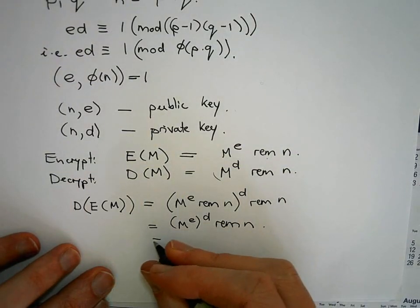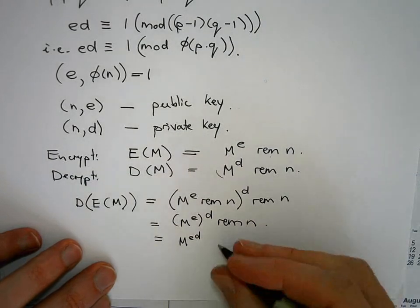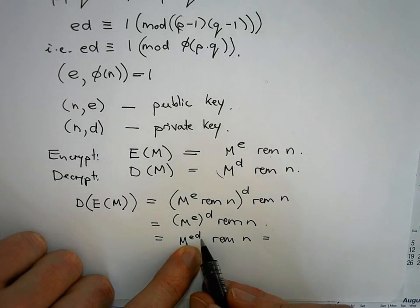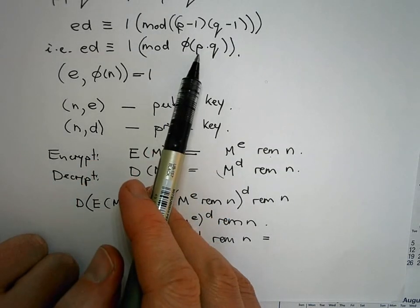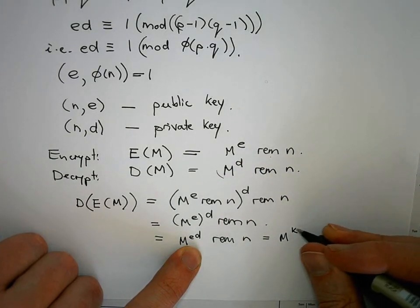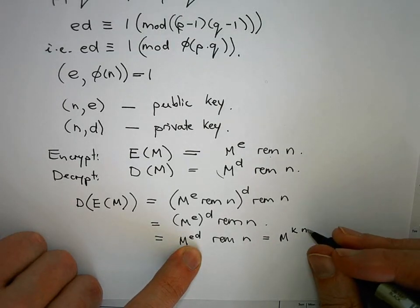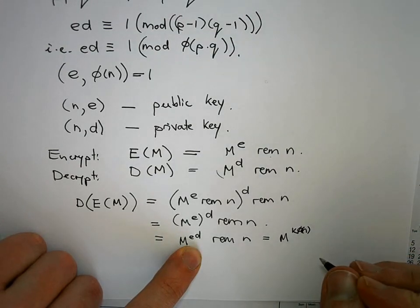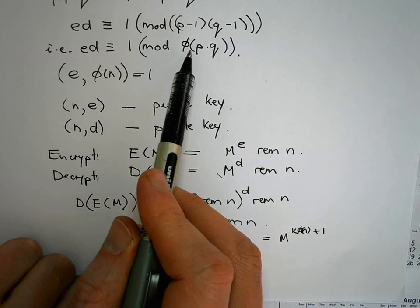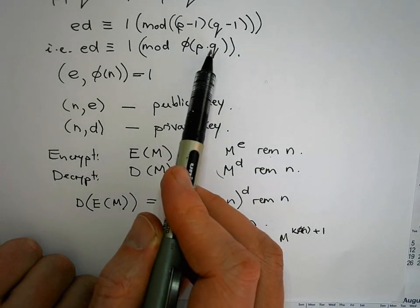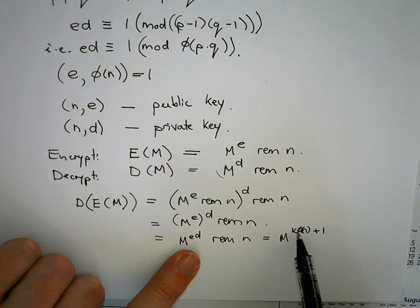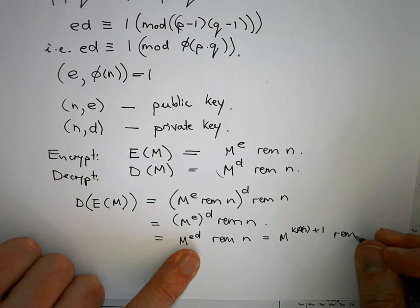All right. So now, this is M to the E D and we're taking the remainder modulo N. That, now remember, E D is congruent to one modulo phi of N. That means I can write E D as some N goes in, say, k times and it leaves, it goes k times phi N and it leaves a remainder of one. So all that I did is I took E D, because E D is congruent to one modulo phi of N, remember pq is n, it means phi of n, phi of pq goes in a number of times into E D and leaves a remainder of one. So I can write it as some number of times phi N plus a remainder of one.